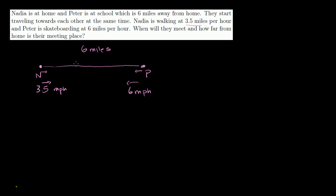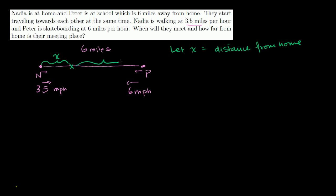Their meeting place is going to be closer to home, because Peter is going faster. Let x be equal to the distance from home where they meet. So this distance is x, and since the whole thing is six miles, the remaining distance is 6 minus x. Nadia will travel x miles, and Peter will travel 6 minus x miles. They travel the same amount of time.